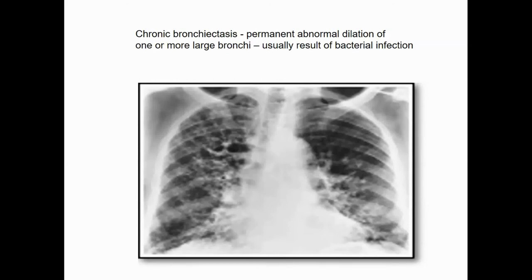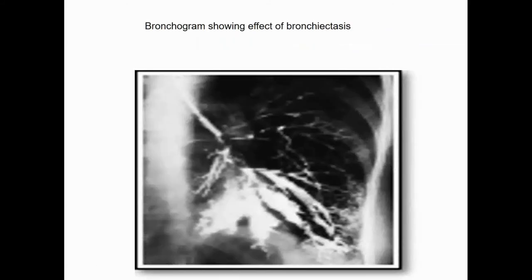Chronic bronchiectasis: if people have repeated bouts of bronchitis or any kind of infection — most often bacterial — repeated infection causes buildup of scar tissue and abnormal dilation of the bronchioles. Sometimes it shows up on a plain x-ray, but it would have to be bad for that. See how ragged and large these bronchial passages are? They shouldn't look like that. This is a bronchogram — old school — but it definitely shows bronchiectasis present in this left lower lobe.